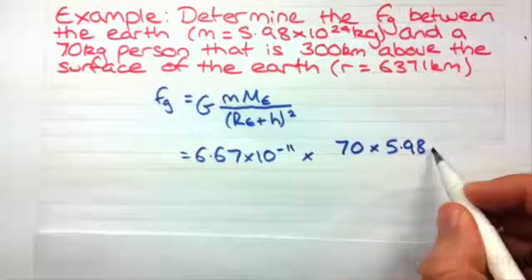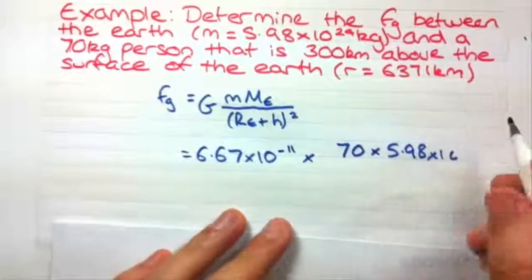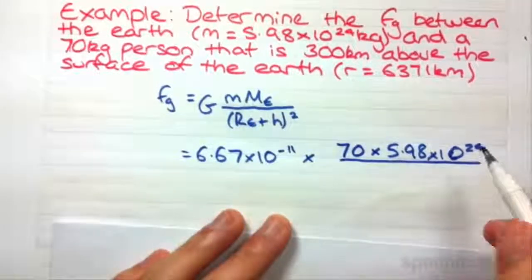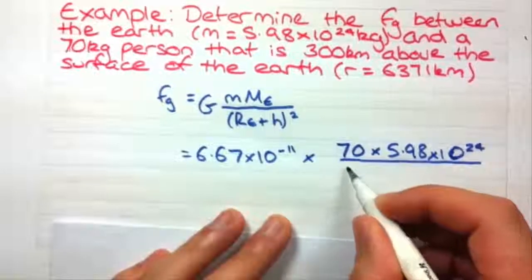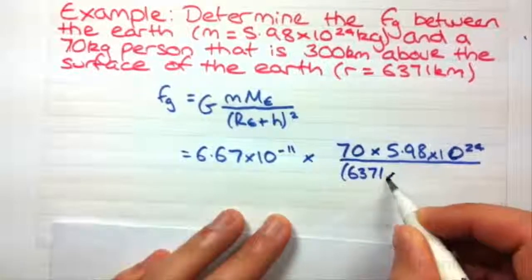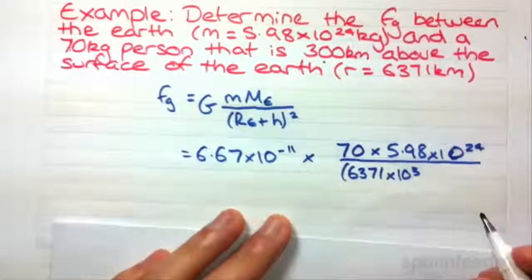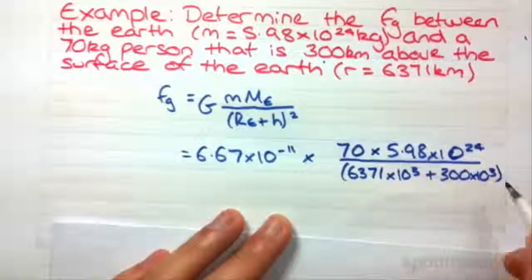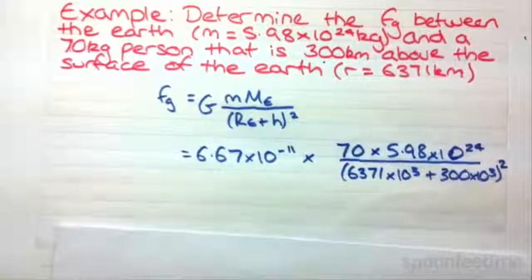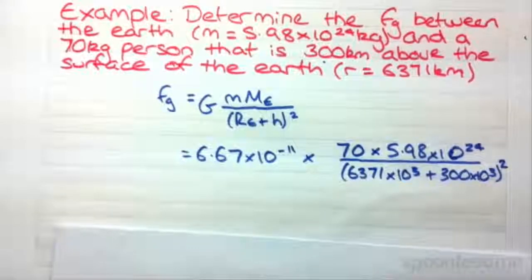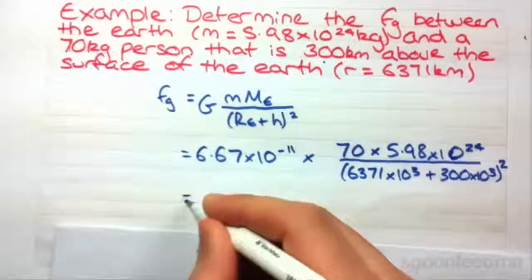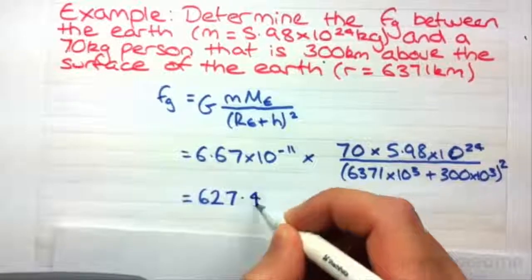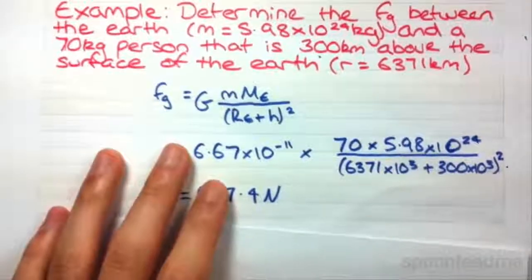5.98 times 10 to the 24. And radius of Earth. Right, so we need to change these to meters because that's our standard unit. So I'm just going to times that by 10 to the 3. As I'm going to do with the height as well. Squared. Right, now if we put that all into our calculator. We end up with the gravitational attraction being 627.4 Newtons. And that's essentially how we use that formula.